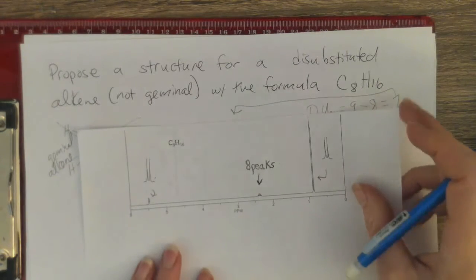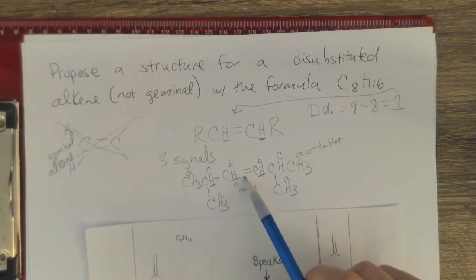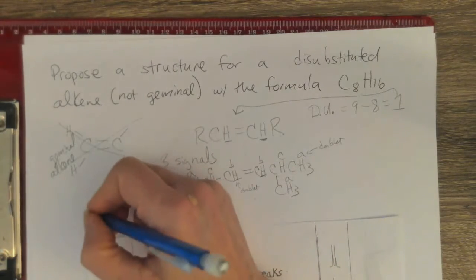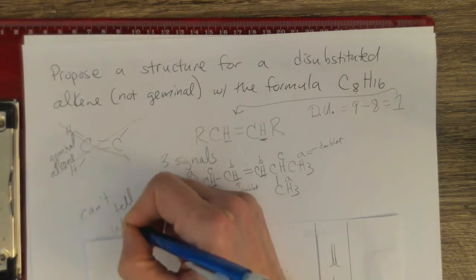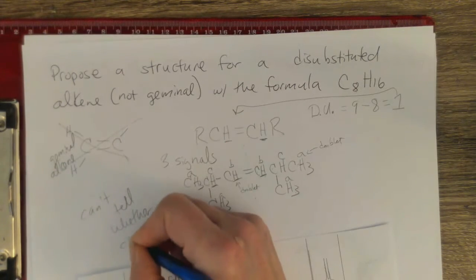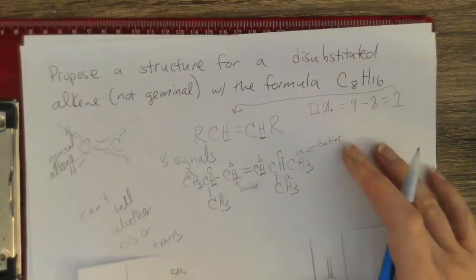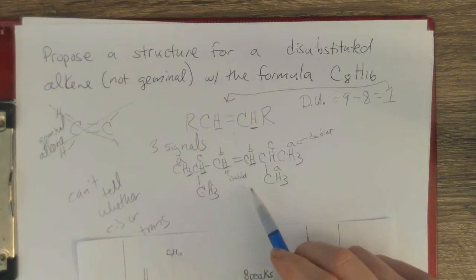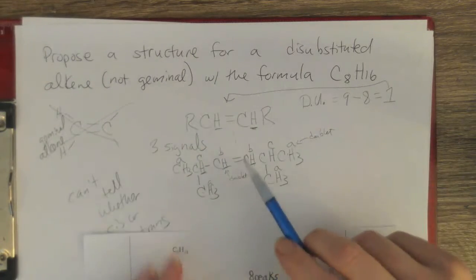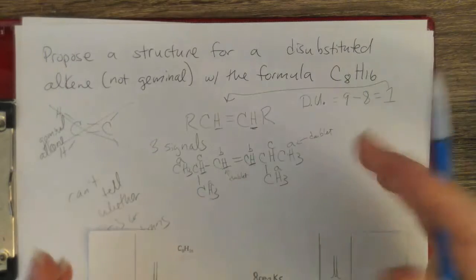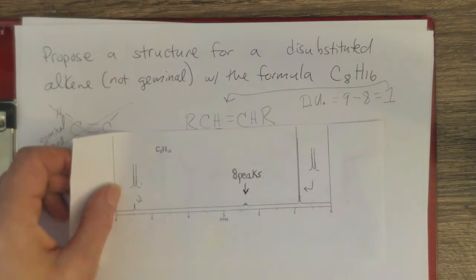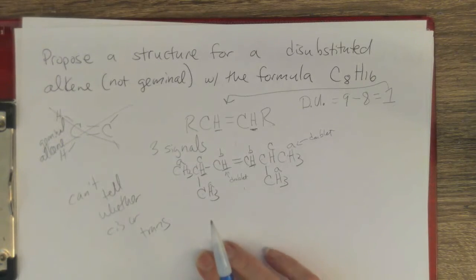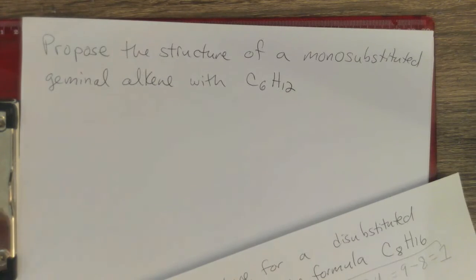Before I forget — can we tell from this spectrum if we have a cis or trans alkene? We can't tell. That's why I didn't draw it indicating cis or trans. On an exam, if you drew just one — cis or trans — I would accept it because it still fits. But from this NMR data we are not able to determine whether we have a cis isomer or a trans isomer.